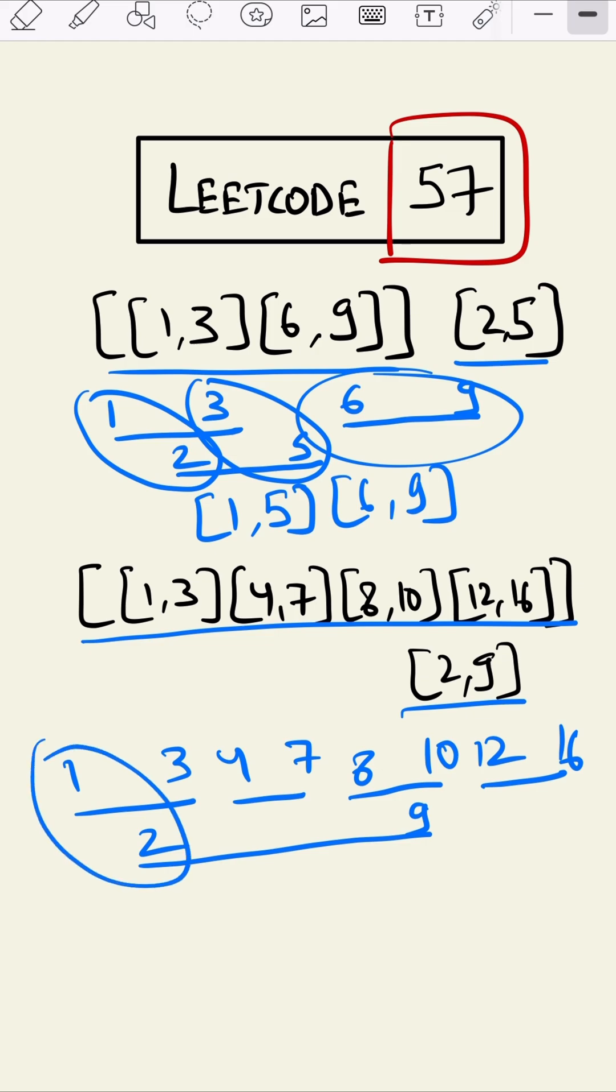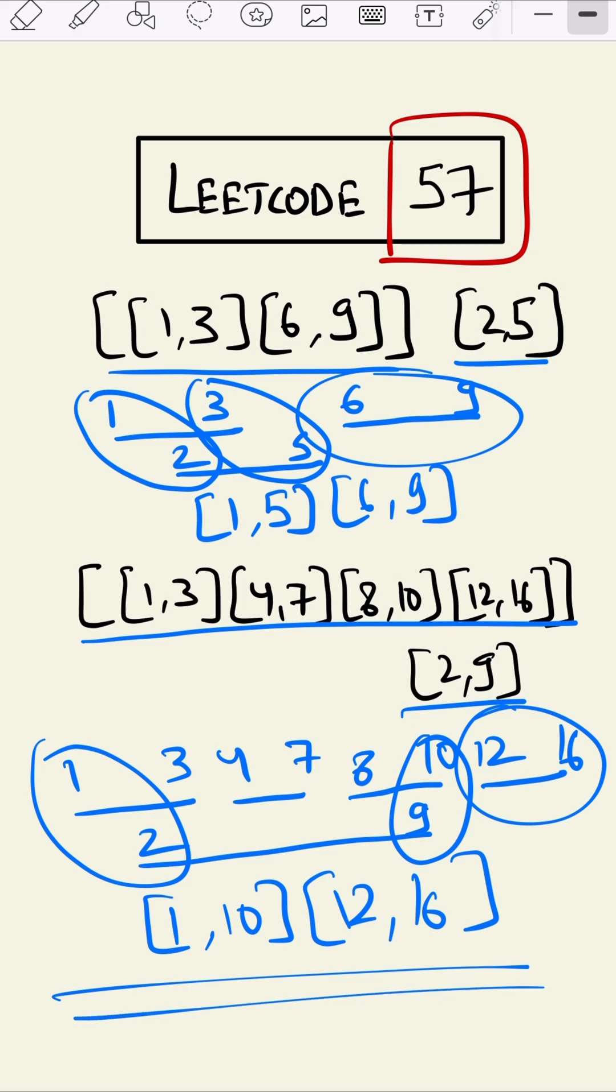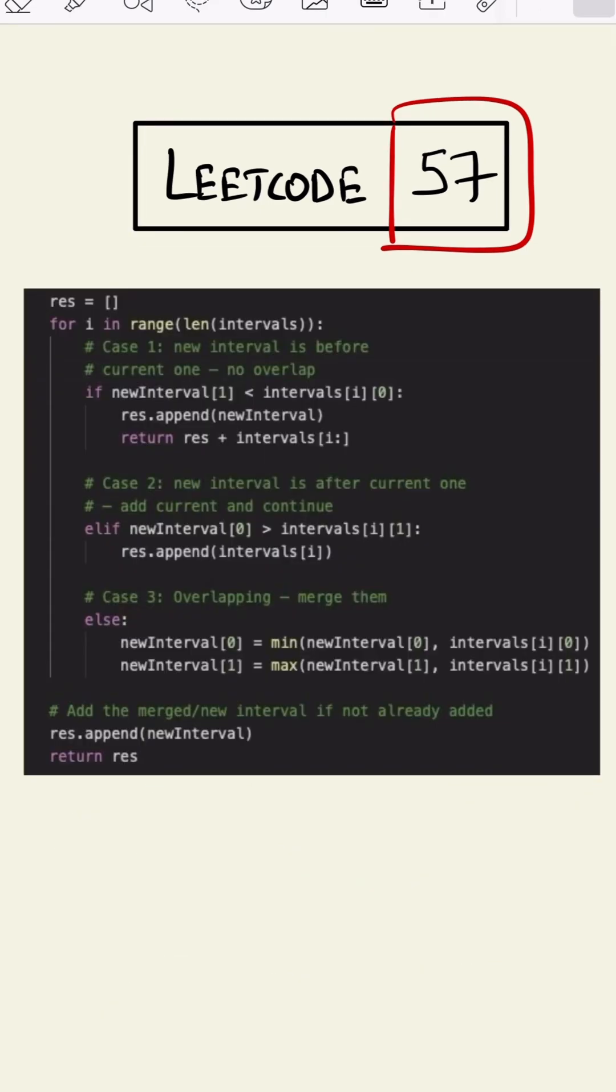Again we'll take minimum of this which will be 1 and the maximum of this which will be 10, and this will come as is because no overlapping. So this is our answer.